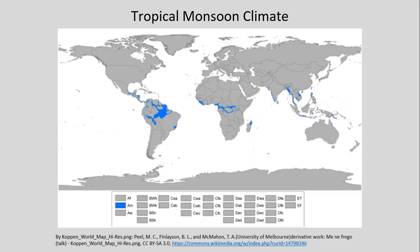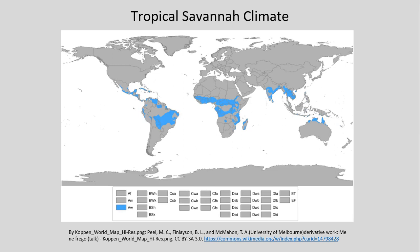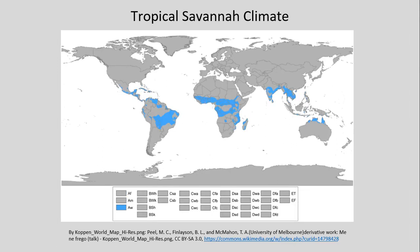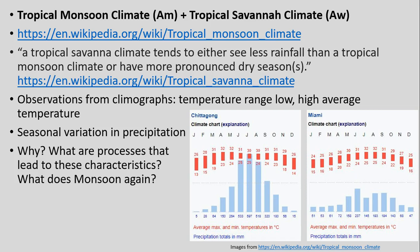Moving on to our other tropical types: tropical monsoon climate and tropical savannah climate. These occur largely within the tropics, at maybe 10 to 20, even up to 25 degrees north and south latitude. To differentiate them: the tropical savannah is a little bit drier and sees a little less precipitation — that's really the line that is drawn between them.